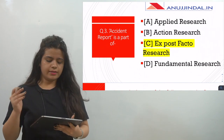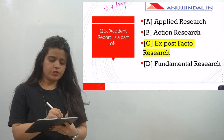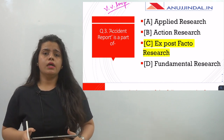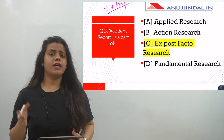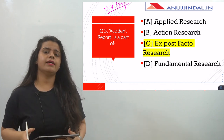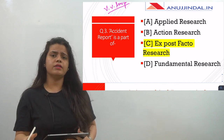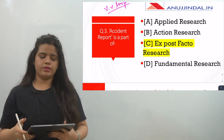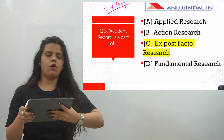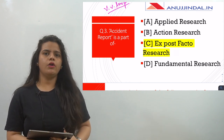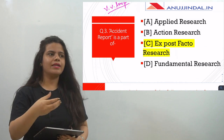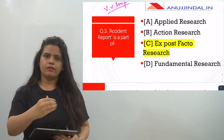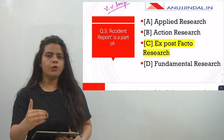The third question is again very important, from research methods. Types of research and research methods are very important because questions come from them every year — from experimental research, exposed factor research, or applied/action research. The question here is: accident report is a part of which type of research? In an accident report, you go from effect to cause, because the accident has already happened and you now have to find the causes.